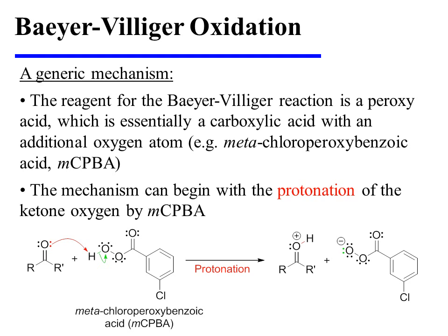The reagent for the Baeyer-Villiger reaction is a peroxy acid, which is essentially a carboxylic acid with an additional oxygen atom. One specific example of a peroxy acid that can be used is meta-chloroperoxybenzoic acid, or MCPBA. The mechanism can begin with the protonation of the ketone oxygen by MCPBA, resulting in the conjugate acid of the ketone.